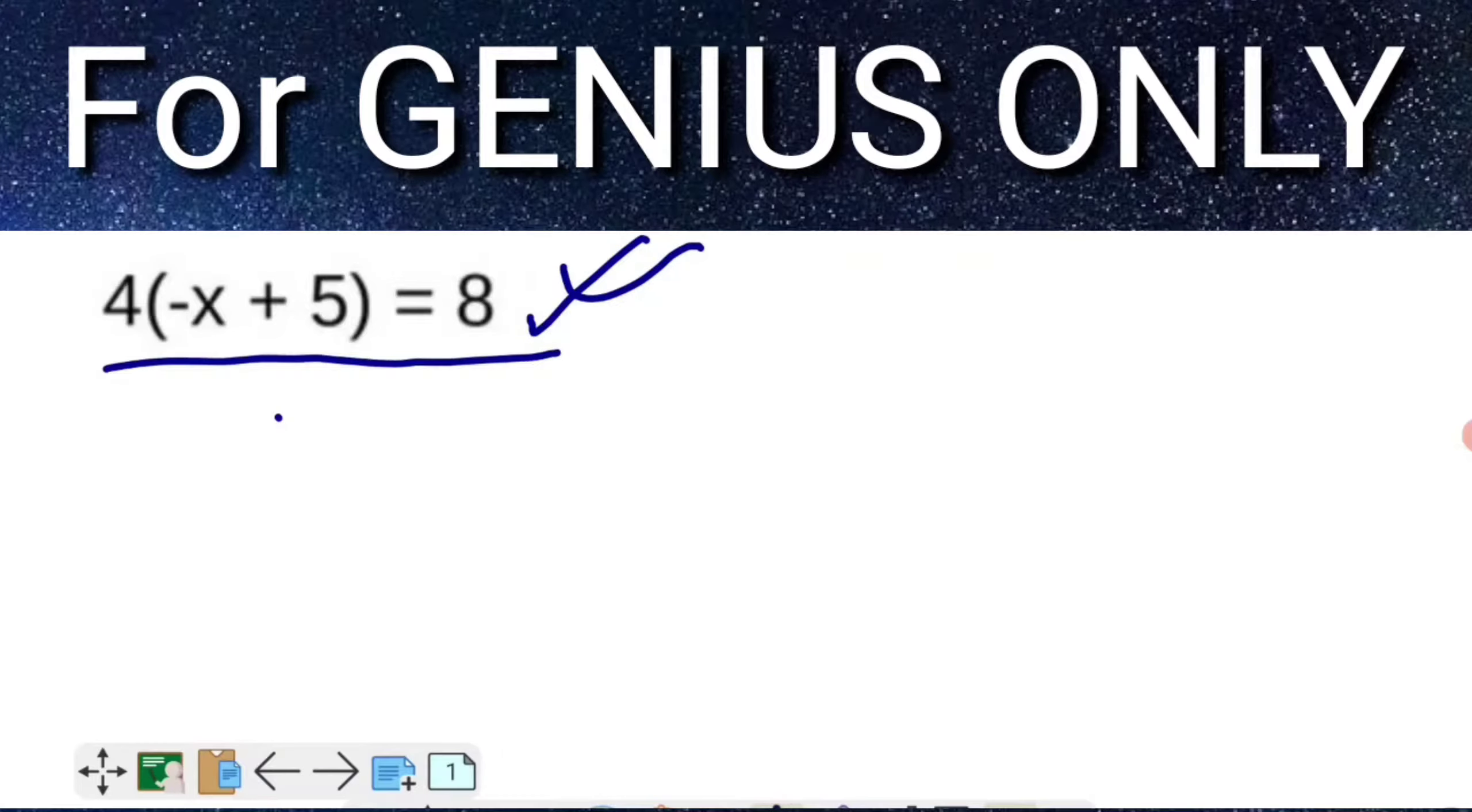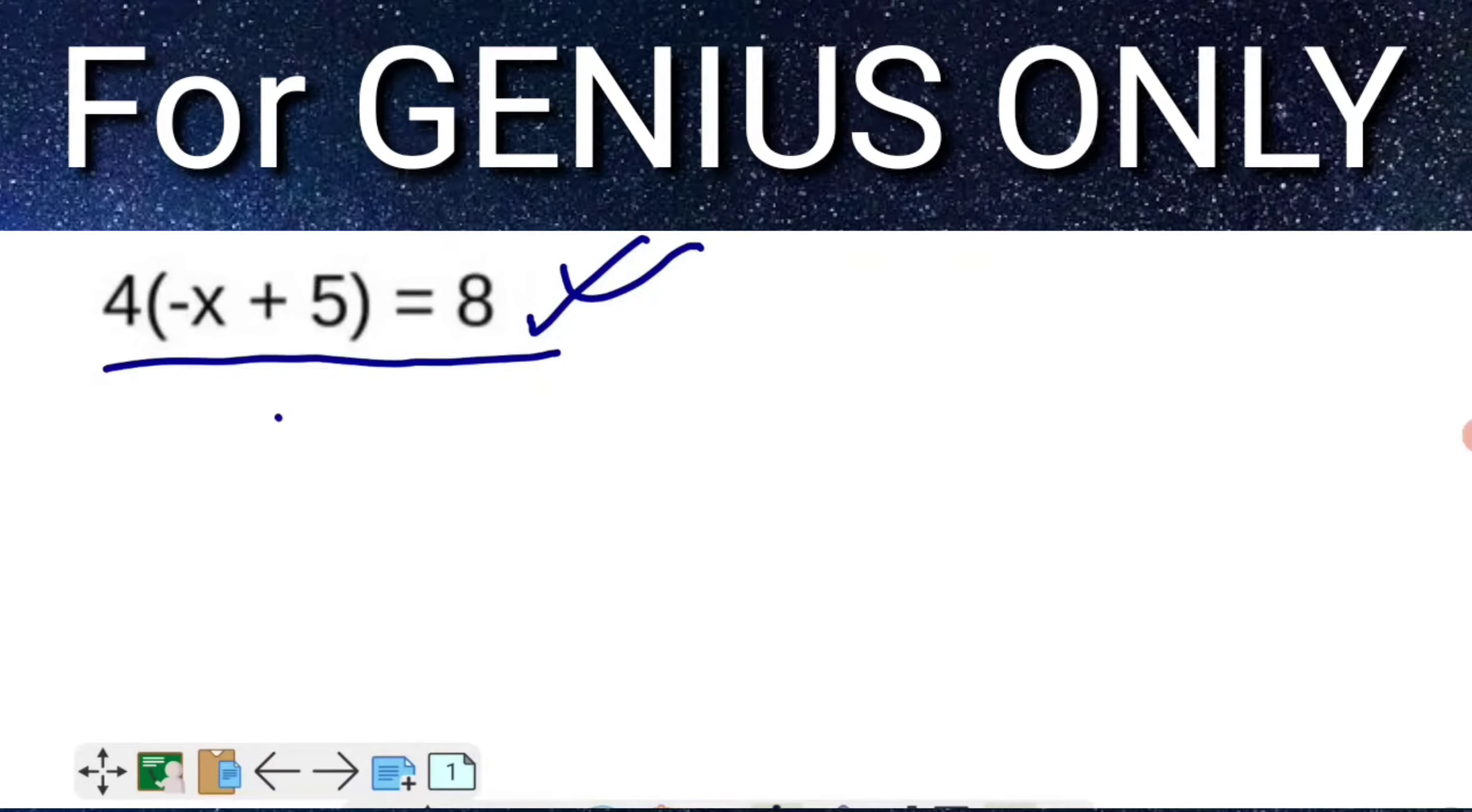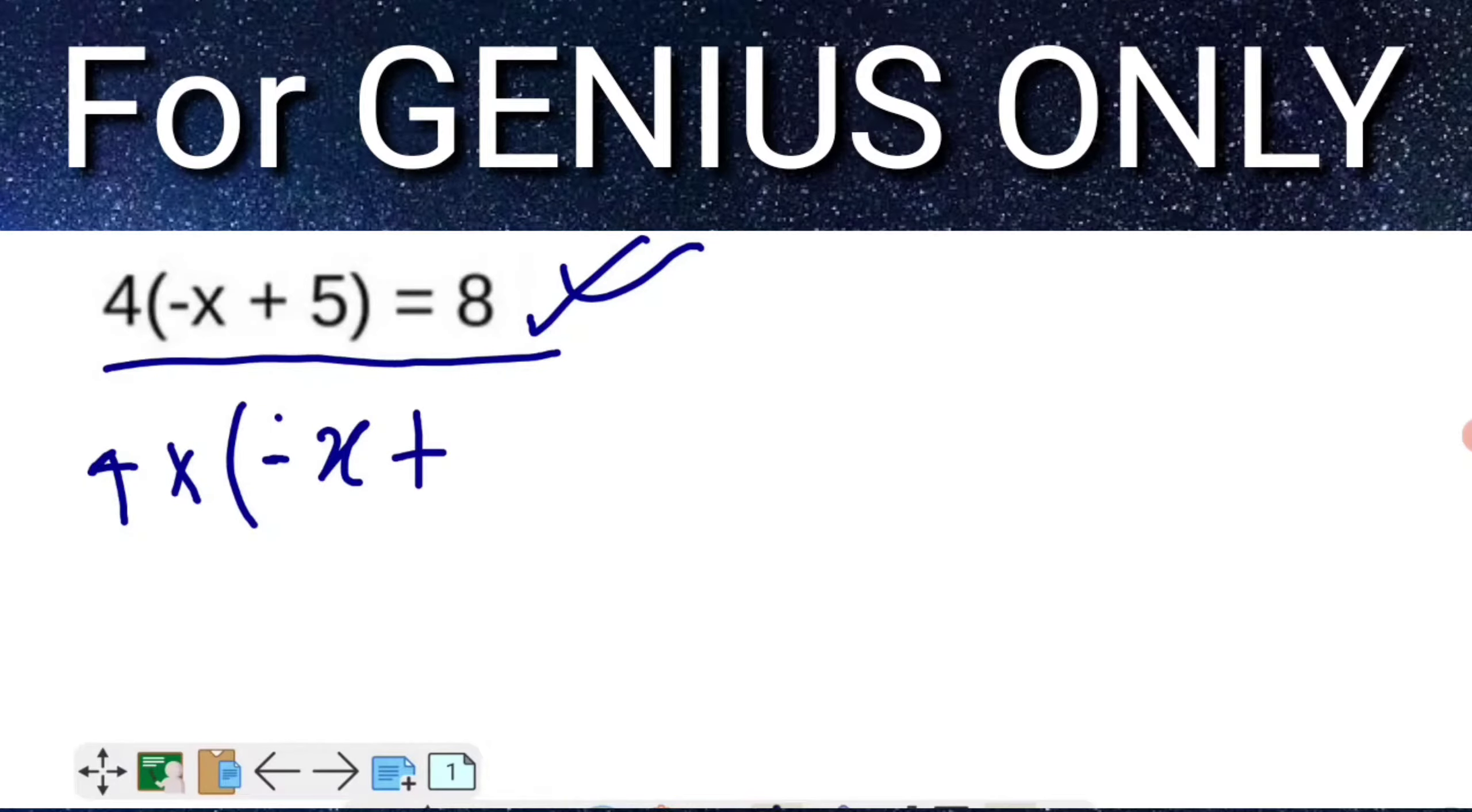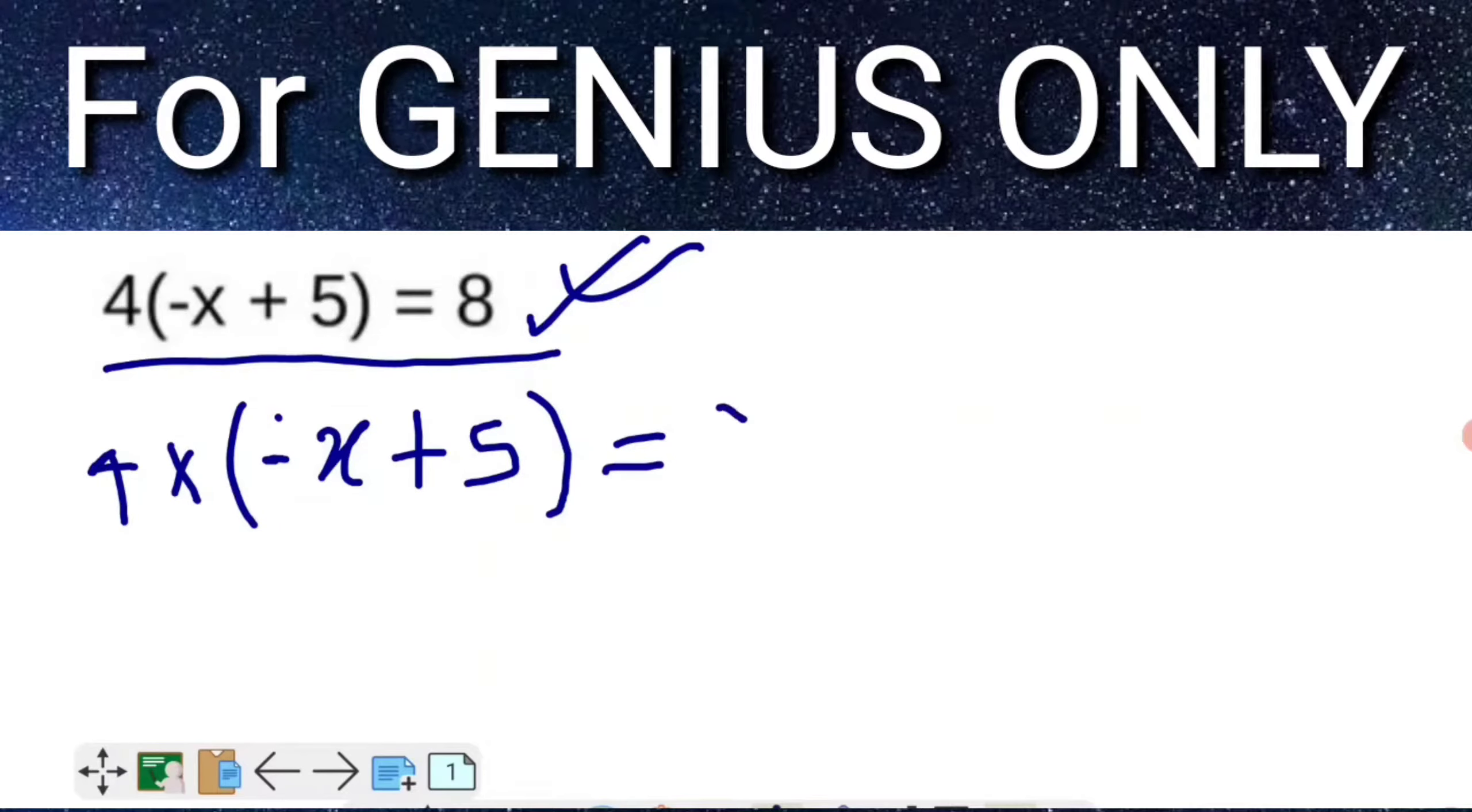Friends, follow these steps. See what we have to do. First, we have this equation: 4 multiply (-x + 5) = 8.